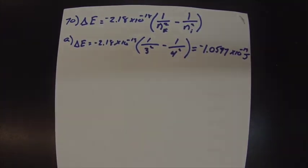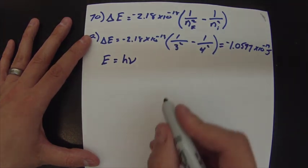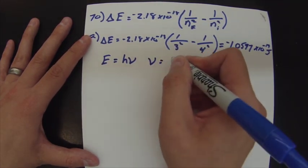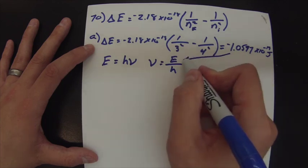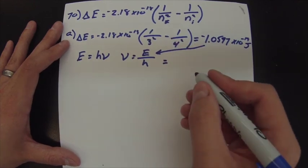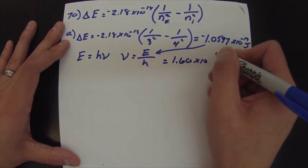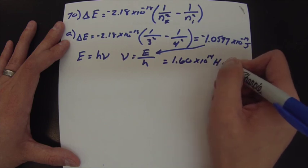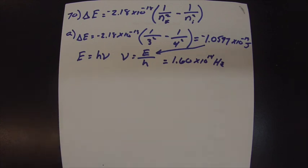Now rearrange E = hν to get frequency = E / h. Plug in your energy and Planck's constant and you get 1.60 × 10¹⁴ hertz. You can't have a negative frequency, so we take the magnitude — but we understand the negative sign indicates emission.